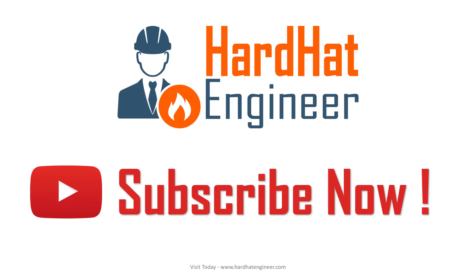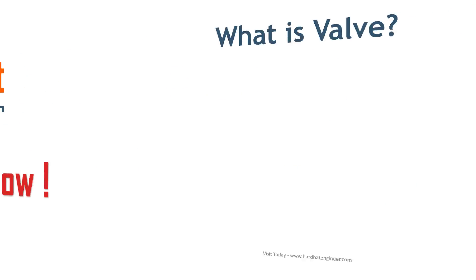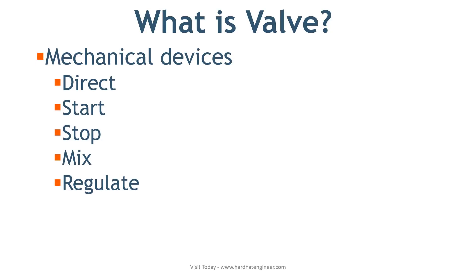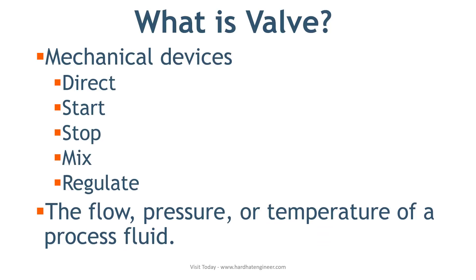Let's start with the definition of a valve. What is a valve? Valves are mechanical devices used to direct, start, stop, mix, or regulate the flow, pressure, or temperature of the process fluid. Valves can be designed to handle liquid, gas, or even slurry applications.